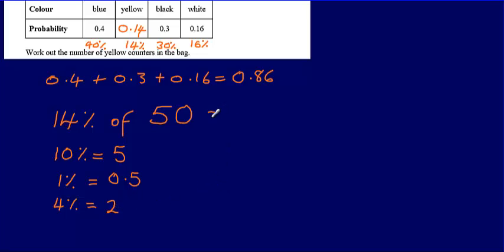So the number of yellow counters in the bag, 14% of 50, that's simply going to be 5 plus 2 for 7. So our final answer, the number of yellow counters in the bag, is going to be 7.